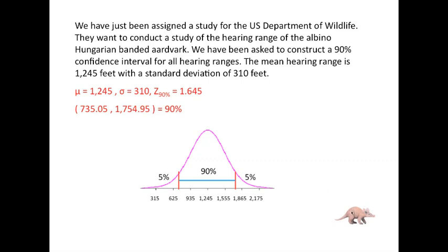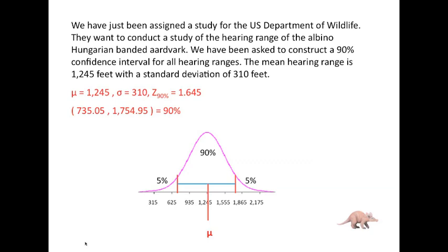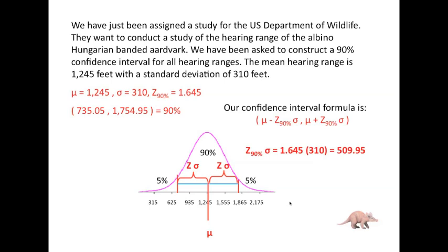That means if we randomly select an albino aardvark, we have a 90% chance of him falling in the interval. We have 10% error, which is split in half — 5% on each side. Mu lies in the exact center of this distribution. We have an area on each side in which we trap 90% of the data, with 5% error on each tail. This interval on each side of Mu is Z times sigma — it tells us how many standard deviations below and above the mean we must go to trap 90% of the data values.